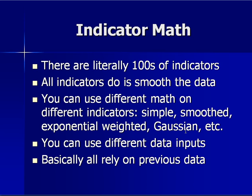You can calculate things differently — a moving average can be simple, smooth, exponential, weighted, Gaussian — all kinds of different mathematical constructs to smooth the price. And they can be moved forward, backwards, sideways, upside down, and turned around.